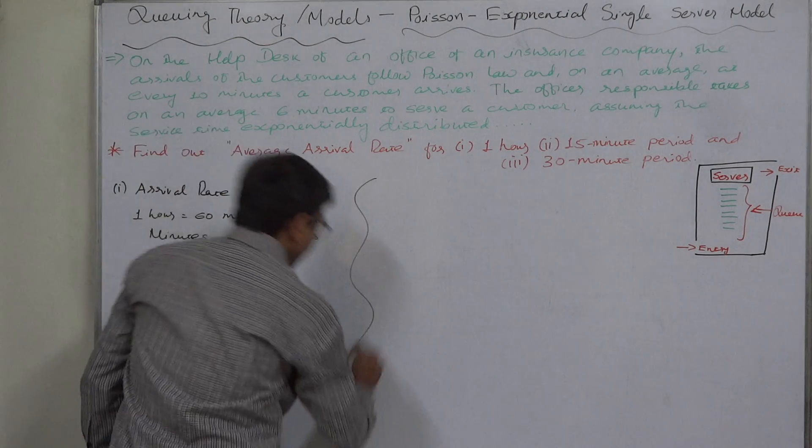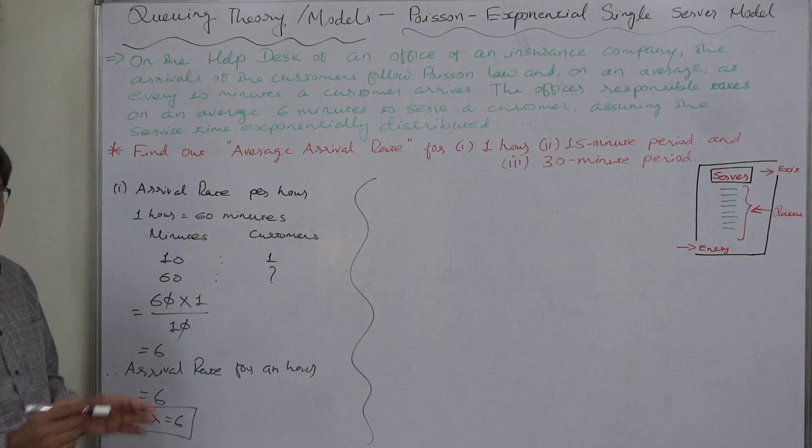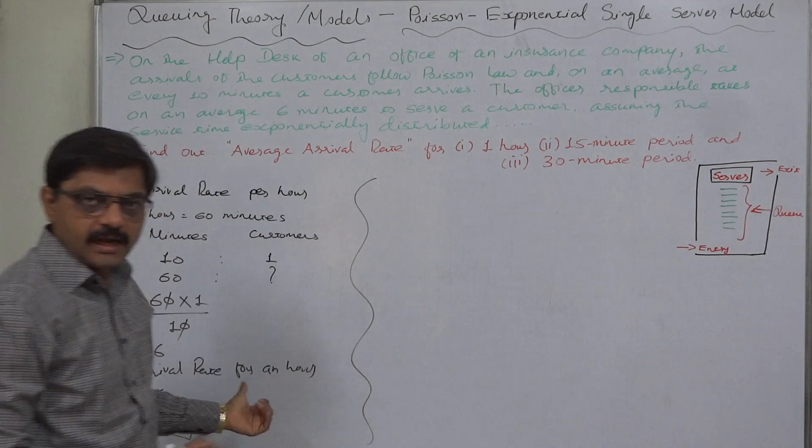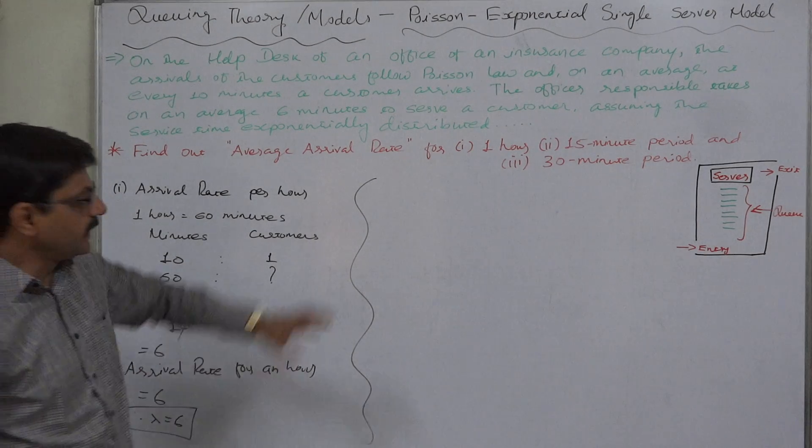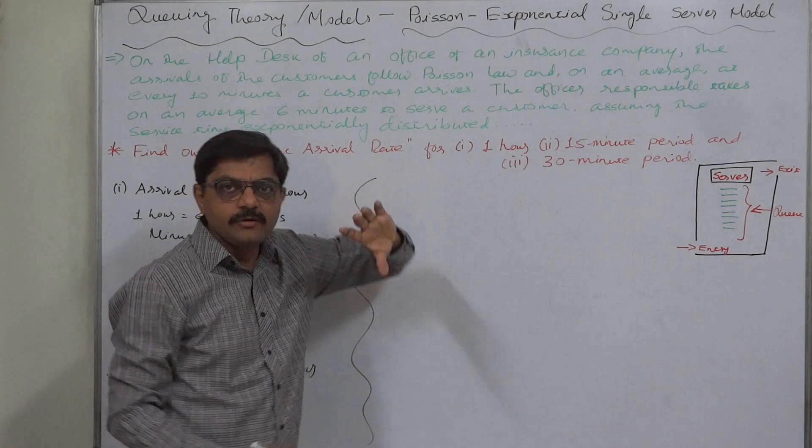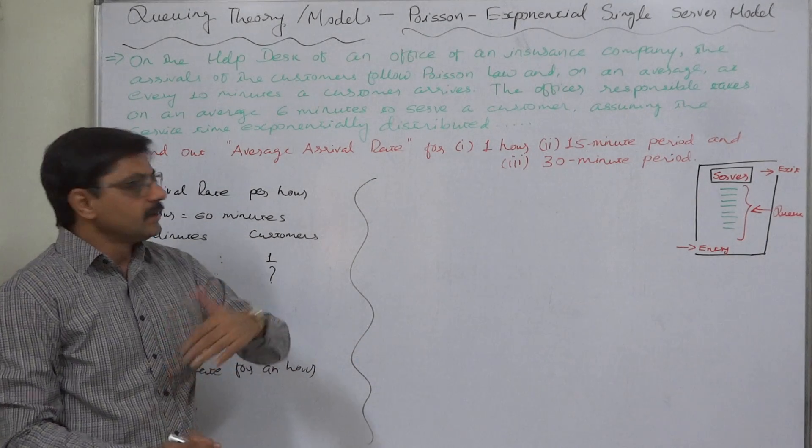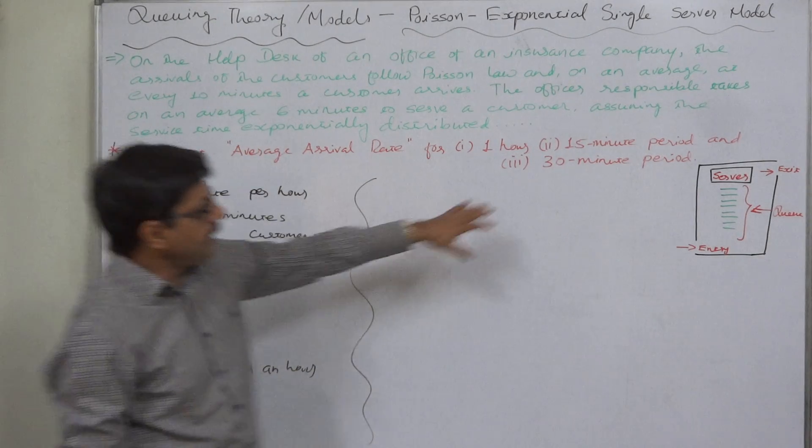Now we have an hourly rate. Even if we have not been asked to calculate this for 1 hour, it is advisable to calculate this for a standard unit of time like 1 hour so that we can calculate the lambda or the arrival rate for all other possible time units very easily.